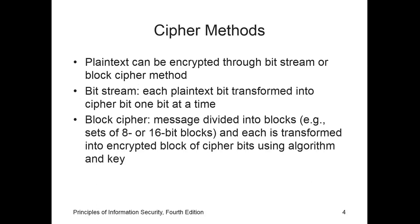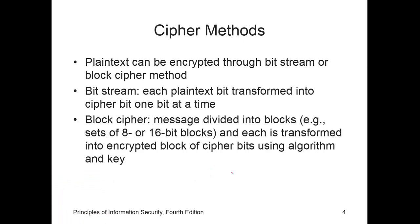The notation used to describe the encryption process differs depending on the source. The first uses the letter M to represent the original message, C to represent the resulting ciphertext, and E to represent the encryption process. So if we have M as a message and we encrypt that message, the result is C — the ciphertext or hidden message. This is the formula commonly used.